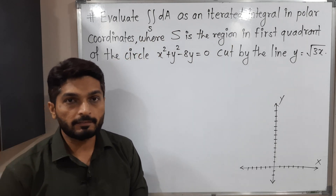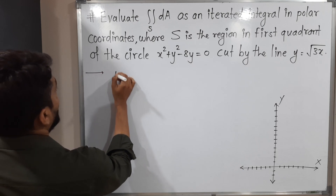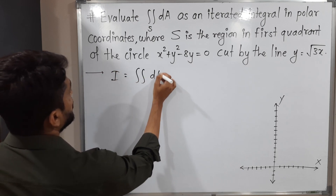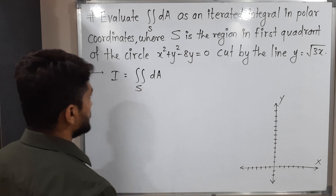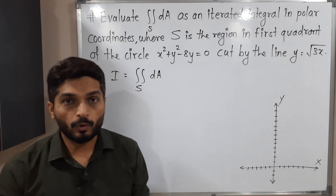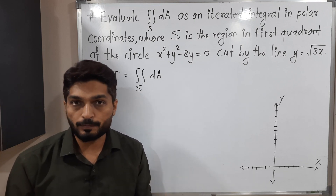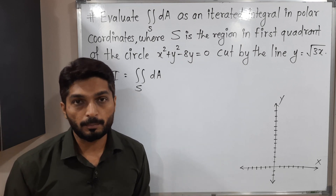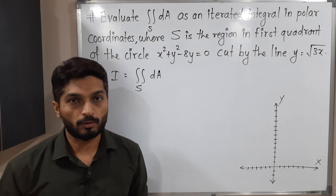So let us write the given integral first. I is equal to double integration dA over S. I will try to draw the region of integration first, then we will convert the problem in polar coordinates and then we will solve.